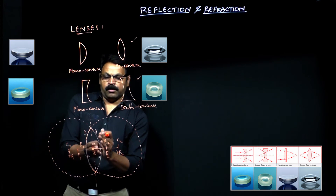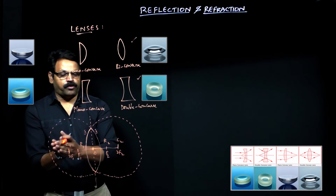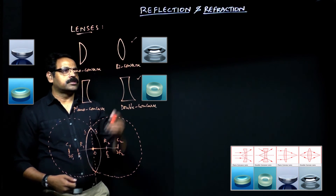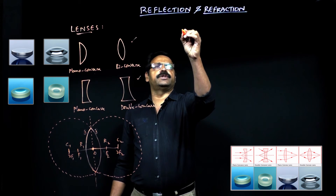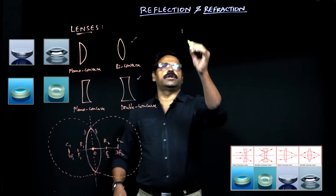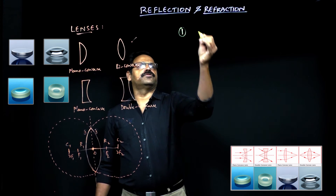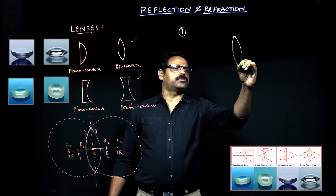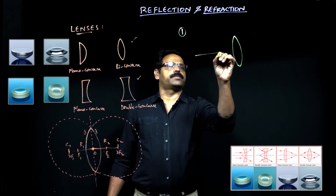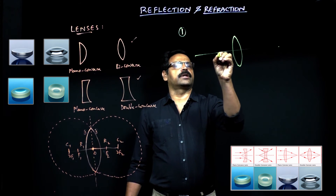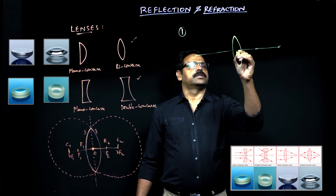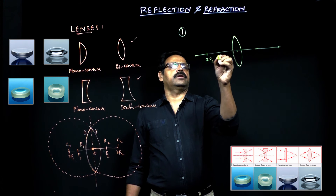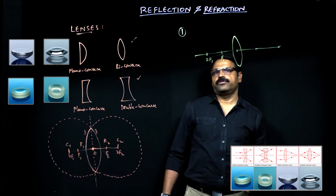In the double convex lens, when a ray falls on the first surface, the second surface gives rise to its image. We will look at all the cases. The principal axis passes through the center perpendicular to the surface — this is the origin at the pole. This is 2f1 and this is f1.